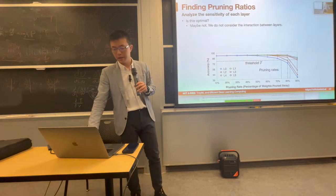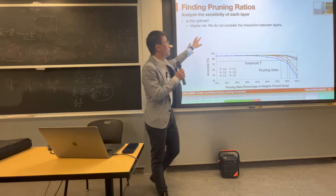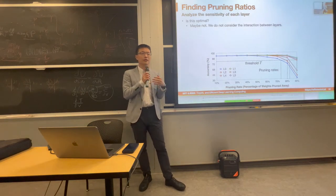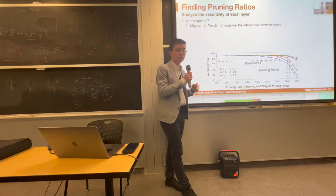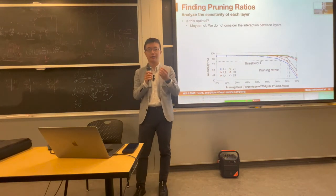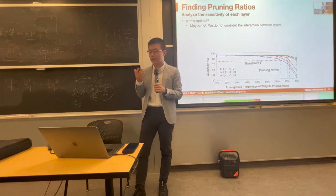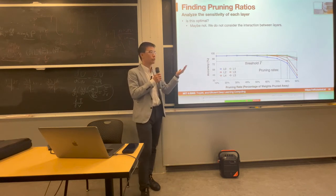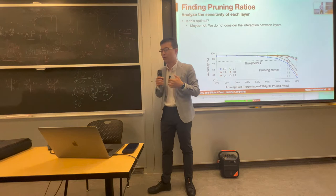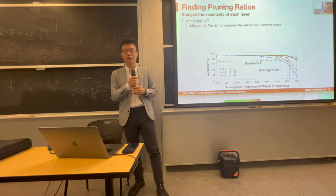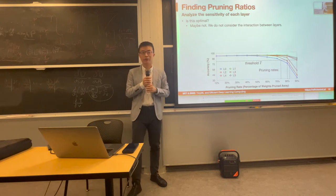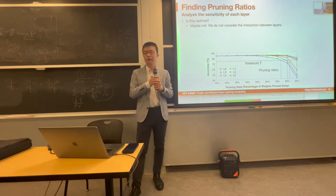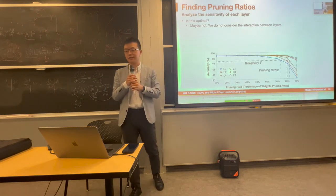Is this optimal? Of course not, because we're considering each layer independently and assuming accuracy drops are addable — but they tightly interact with each other. This is a trade-off between how many experiments you want to run versus the approximation quality. In real-world use and in many Intel-media pruning tools, this is a very widely used heuristic. It's very robust and easy to do — feel free to use it if you're designing chips or doing pruning for acceleration.